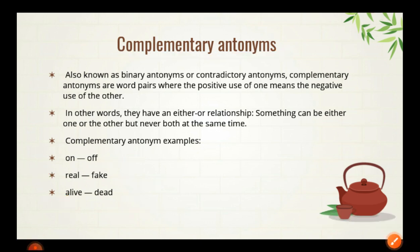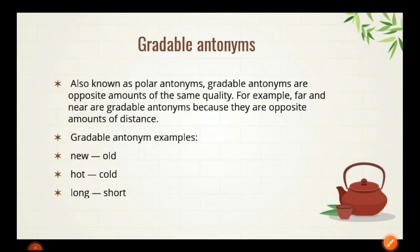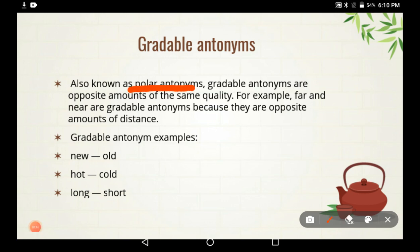The next type is gradable antonyms, also called polar antonyms. Gradable antonyms are opposites that represent different amounts of the same quality. For example, far and near are gradable antonyms because they are opposite amounts of distance — the same quality. Other examples include new/old, hot/cold, and long/short.